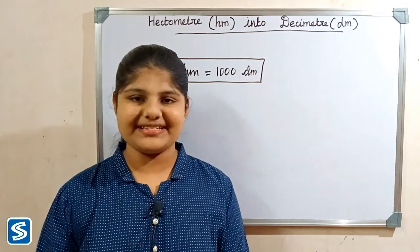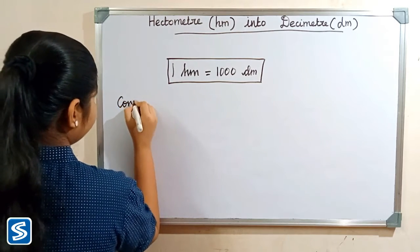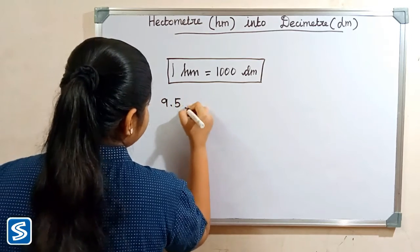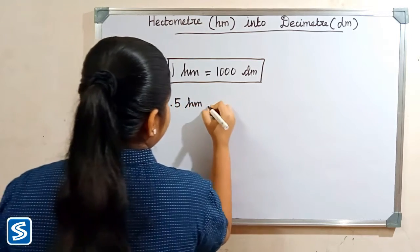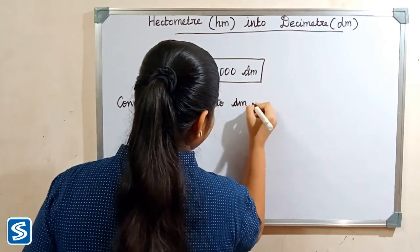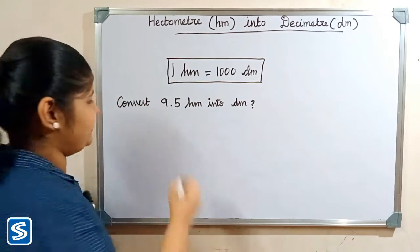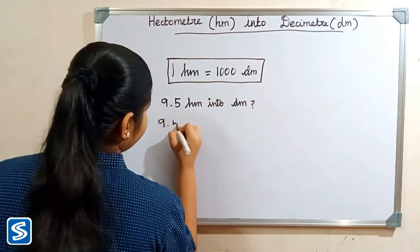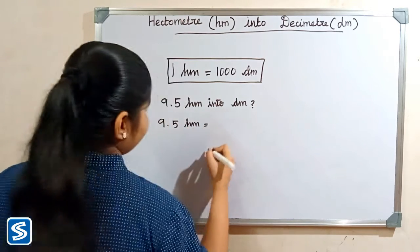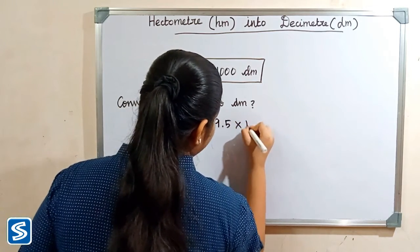Now we will take one more example: convert 9.5 hectometer into decimeter. So 9.5 hectometer can be written as 9.5 multiplied by 1 hectometer. Now we have to substitute 1000 decimeter in the place of 1 hectometer, so we get 9.5 multiplied by 1000 decimeter.